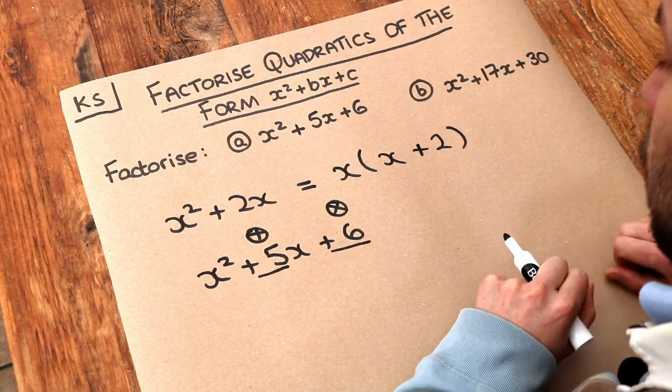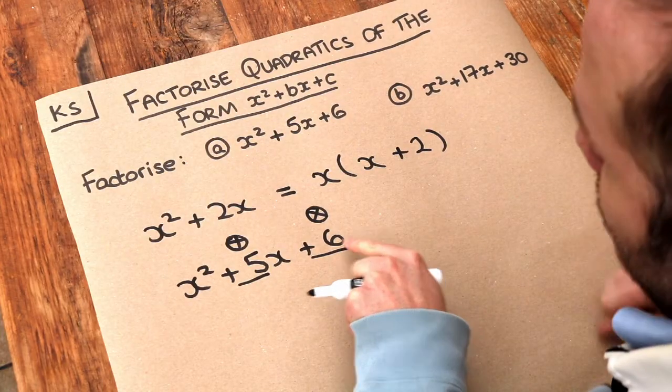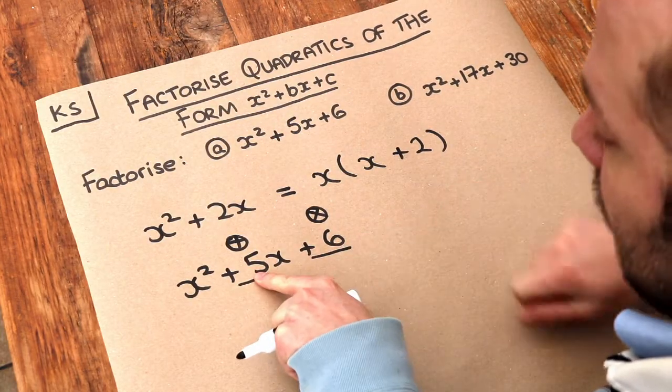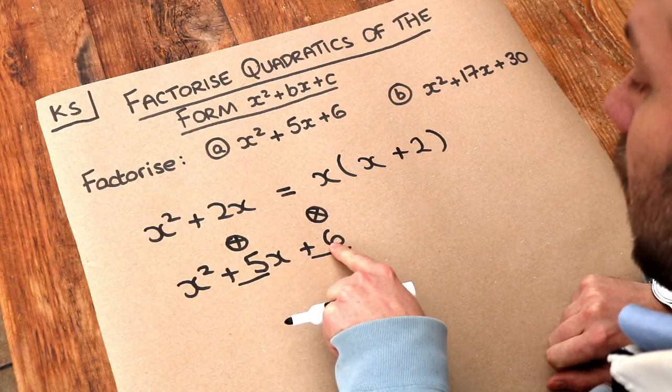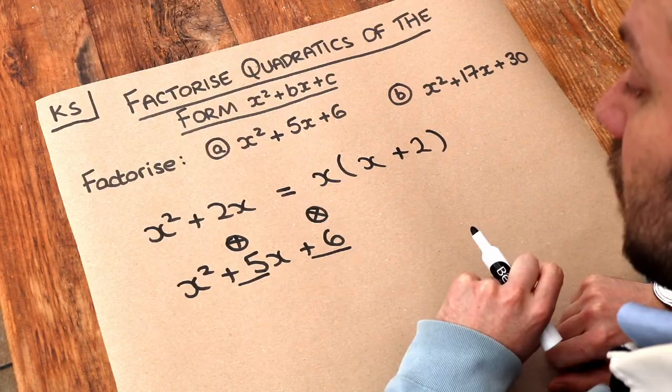The constant term as we call it. Well what are those two numbers? What multiplies to give 6? Well we could have 1 and 6 multiply to give 6 but they don't add up to give 5. Or it could be 3 and 2. 3 and 2 multiply to give 6 and they do add up to give 5.